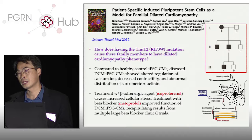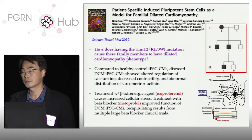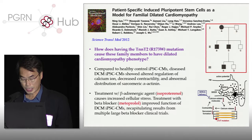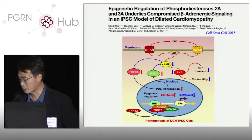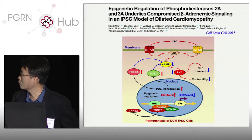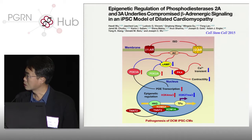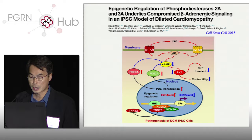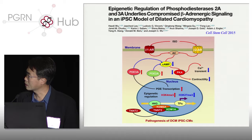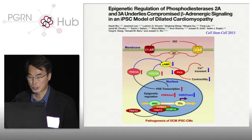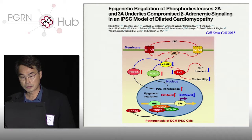Once we recruit these patients into our biobank, these cells are with us for the next 5, 10, 20 years — very different from a clinical trial where patients come and go. Howie Wu and other postdocs were able to show that the mutant troponin T actually translocates into the nucleus, binds to histone demethylase enzymes KDM5A and KDM1A, which increases phosphodiesterase 3A and 2A, increases hydrolysis of cyclic AMP, and decreased cyclic AMP causes decreased protein kinase A, leading to decreased calcium transient and decreased contractility of these iPSC cardiomyocytes.